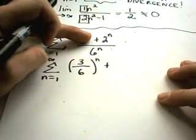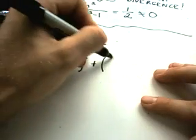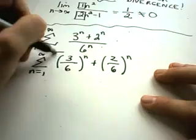Plus I can bust it up again, 2 to the n over 6 to the n. That's 2 over 6 to the n power.